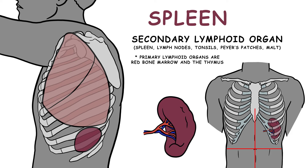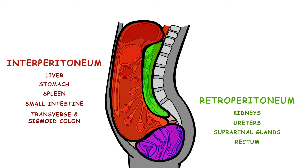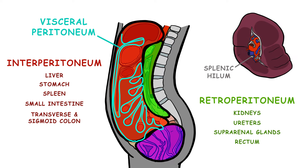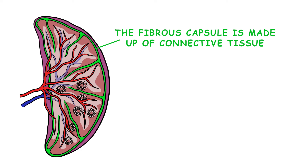The spleen is a secondary lymphoid organ in the upper left quadrant of the abdomen between the 9th and 11th ribs. It is an interperitoneal organ enveloped by the visceral peritoneum, except at the splenic hilum. The fibrous capsule that envelops it is made up of connective tissue. The capsule forms short extensions into the organ, called trabeculae.